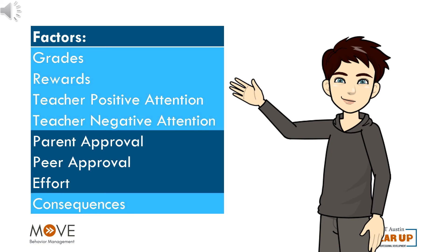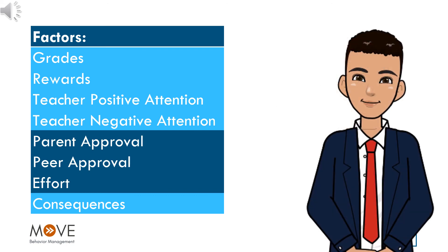Of these factors, several of them are teacher-created, like grades, rewards, teacher attention, and consequences. Because Billy's teacher created several classroom strategies that included both expectancy and value to Billy, he considered them in his decision process. As a result, Billy followed the rule.